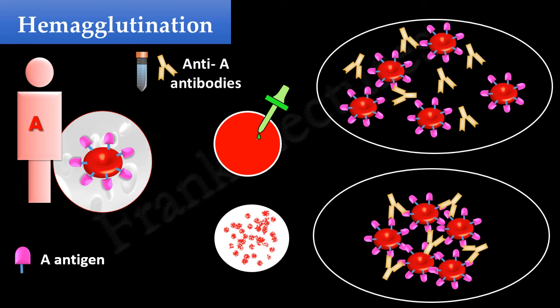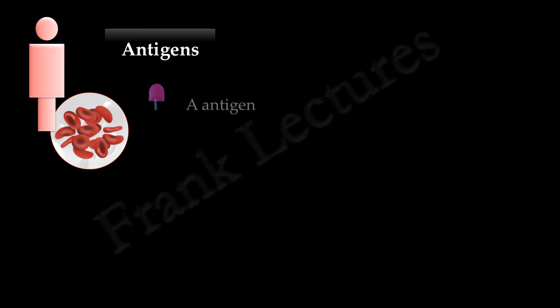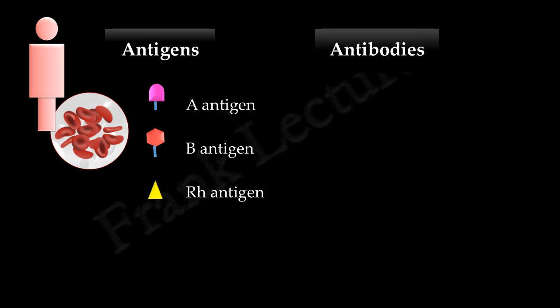Let's now understand how blood typing is done. For this test, we will require a few drops of blood from a person whose blood group is to be determined. We know that blood will contain the target antigens on RBCs. These target antigens are A antigen, B antigen, and RH antigen. We will detect the presence and absence of these antigens in blood and determine the blood type. Next we will need antibodies specific to these red blood cell antigens.